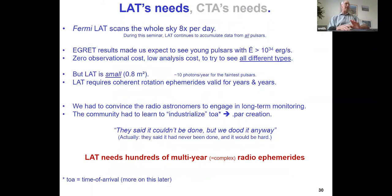Let's talk about LAT first. So as I said, Fermi LAT scans the whole sky eight times a day during the seminar. We're getting more data on everything. And so we potentially can see hundreds and hundreds of pulsars, even ones you don't expect. And so we wanted, we needed hundreds of radio ephemerides. But it's worse than that. The LAT is small. Sort of a meter and a half by meter and a half. And then there's acceptance. So for our famous pulsars, we're not even getting one photon per month. And to see a signal above background, you integrate for years and years and years. And so we need our rotation ephemerides, our foldings to be valid. And the radio community, they said it couldn't be done, but we do it anyway. Well, actually, they said it had never been done and it would be hard.